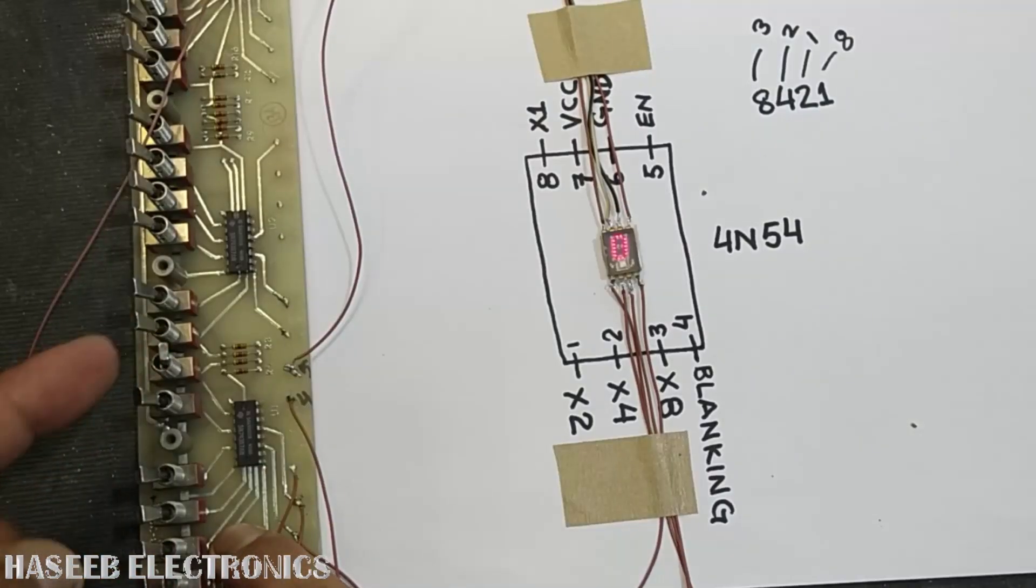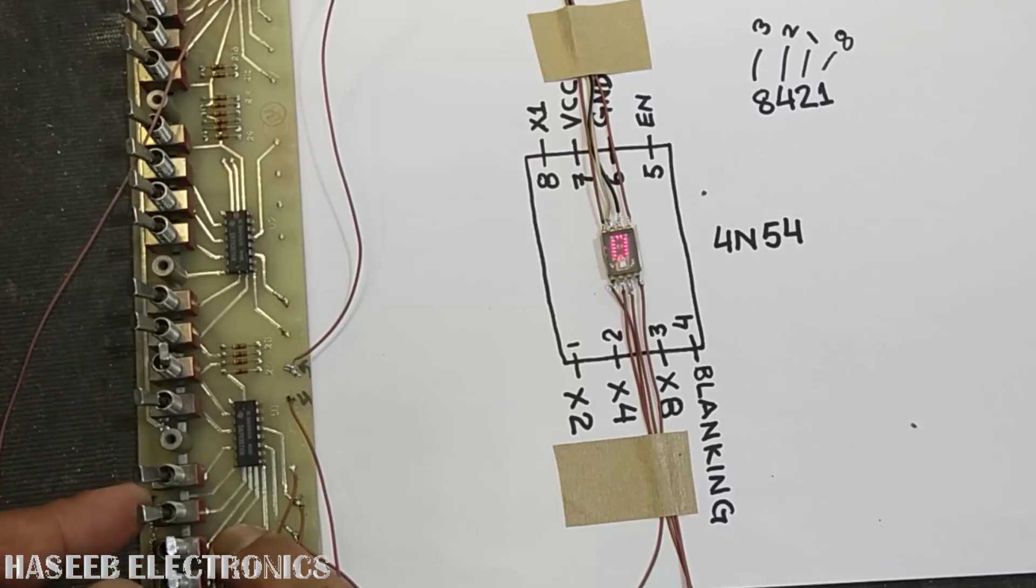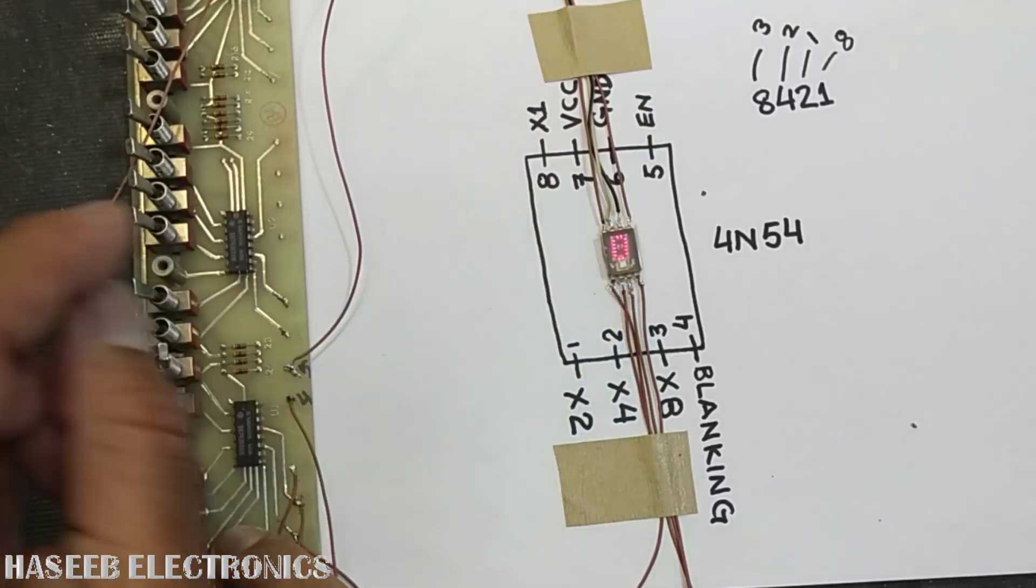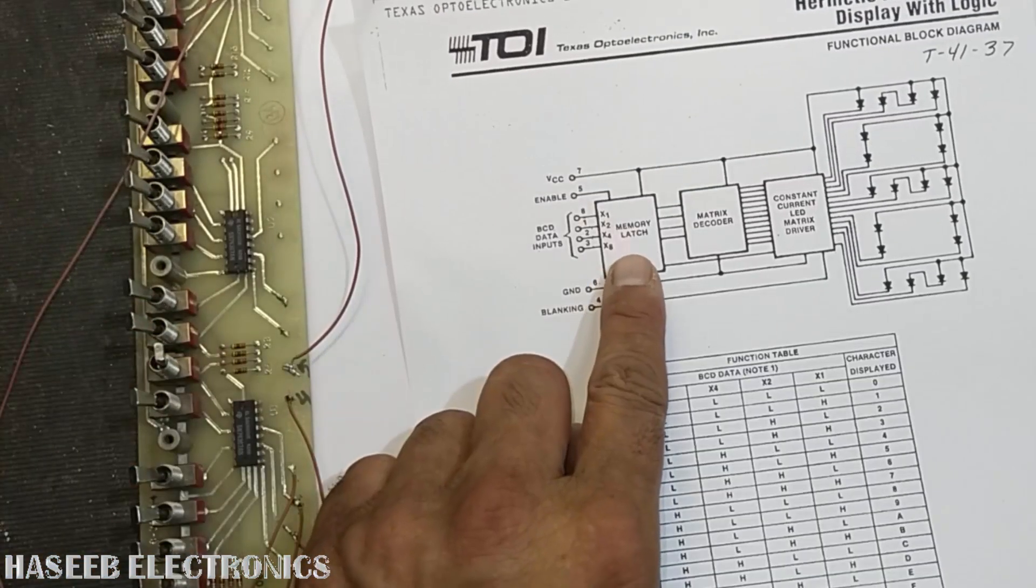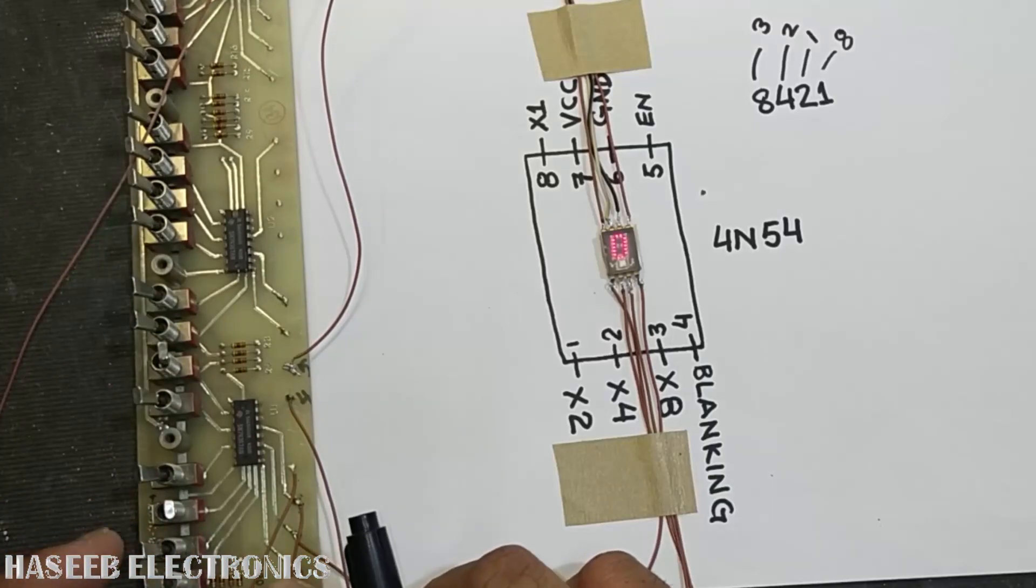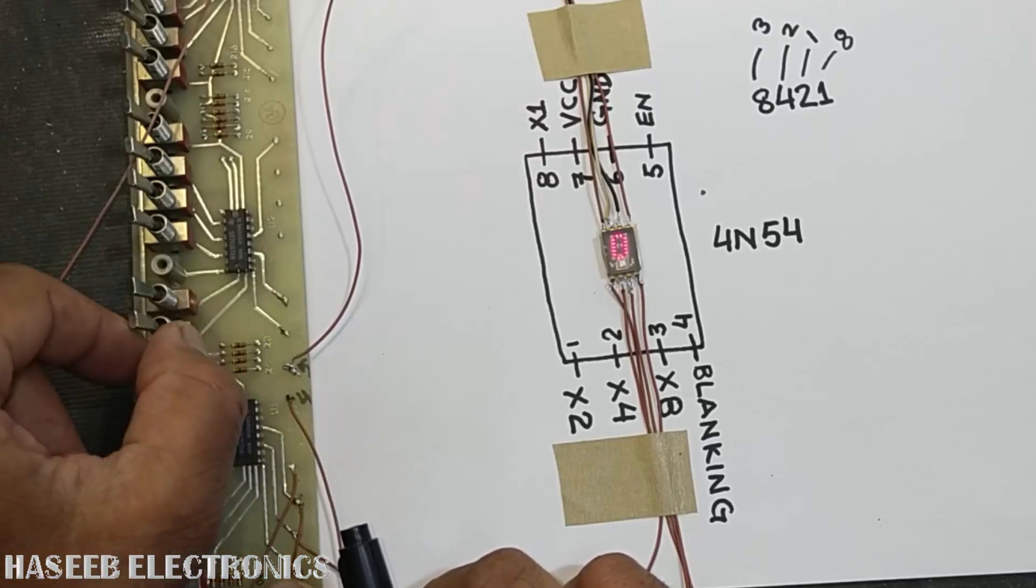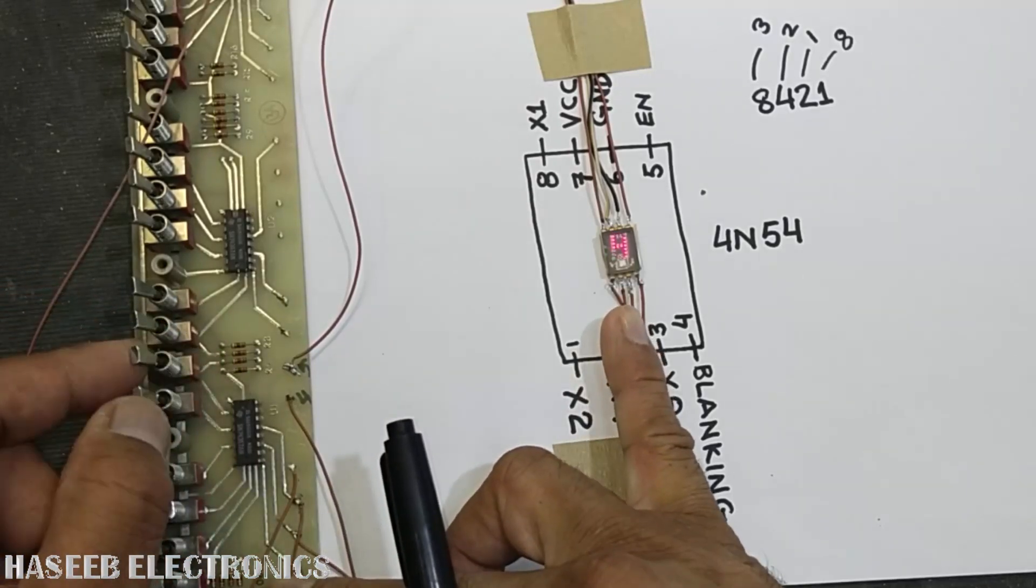When the enable pin is high, if we write any data in the input pins, it will not allow to write because it will disable the memory latch. Anything we load in the data when this pin is low will display the data.